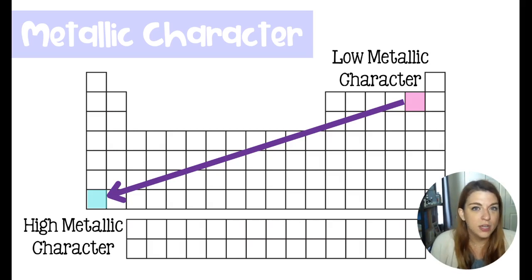Then again, we can judge all of the other elements based on this trend. Something I love to look at is really just like how the periodic table is cut up. Remember, the metals are on the left side, metalloids are on the staircase line, and nonmetals are over here on the right side. So it makes sense that the metallic character would be with the metallic elements, and the low metallic character would be over here with nonmetals.